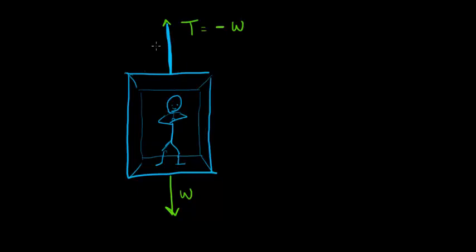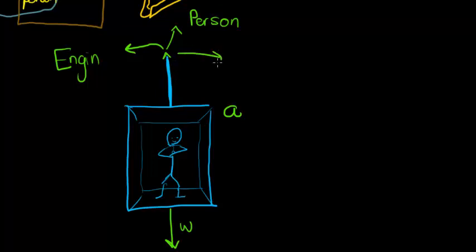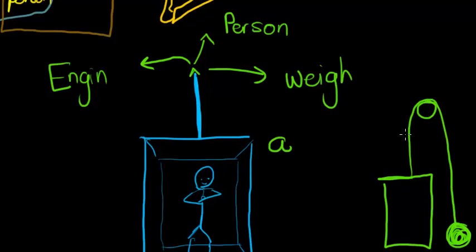But what if the elevator was heading upwards with an acceleration? If it has an upward acceleration, it is somehow being pulled up — maybe by an engine, a person, or even another heavy weight on the other side of a pulley that is heavier than the elevator and pulls it upward. It doesn't matter what is on that side.